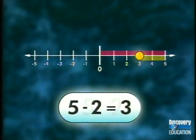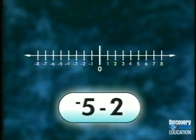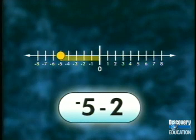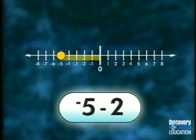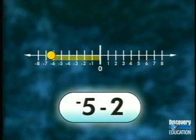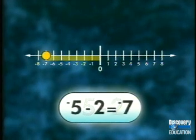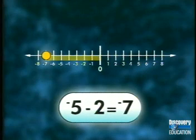In our next example, we'll find the difference of negative five and two. Begin at zero. Move five units in a negative direction. Since we're subtracting a positive two, we'll need to move in the opposite or negative direction two units. As a result, we end at negative seven. Therefore, the difference of negative five and two is negative seven.